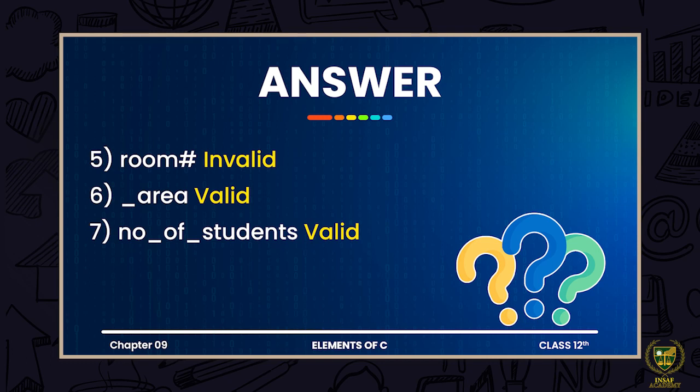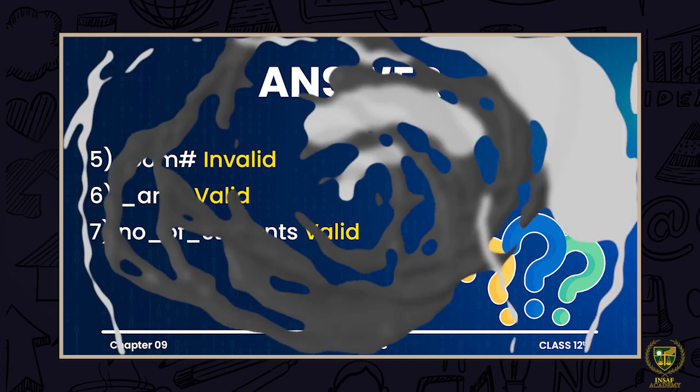Next is 'number_of_students'. If you look at it, 'number_of_students' consists of three separate words joined together using underscores. Since underscore is an allowed symbol in the naming convention, this means it is a valid name for the variable.